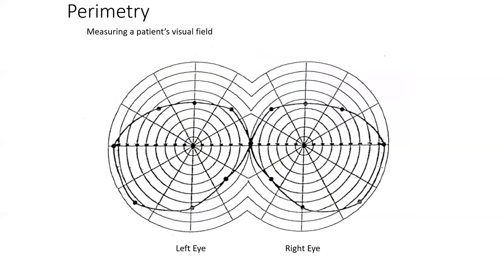Taking that concept to the actual view of what you're seeing when you're looking out into the visual field, we have a graph like this. We conduct perimetry, which just measures a patient's visual field — their central acuity as well as their peripheral vision. In this representation, you see the left eye, the right eye, the brow above, the cheek below, and the nose in the center.